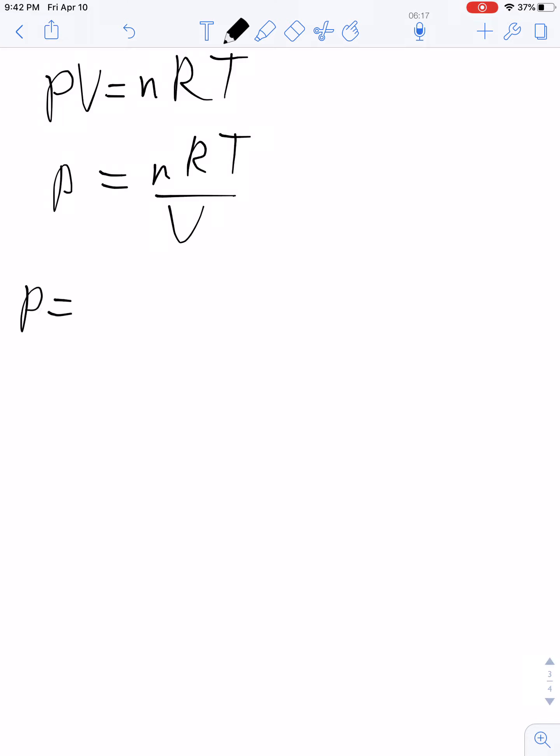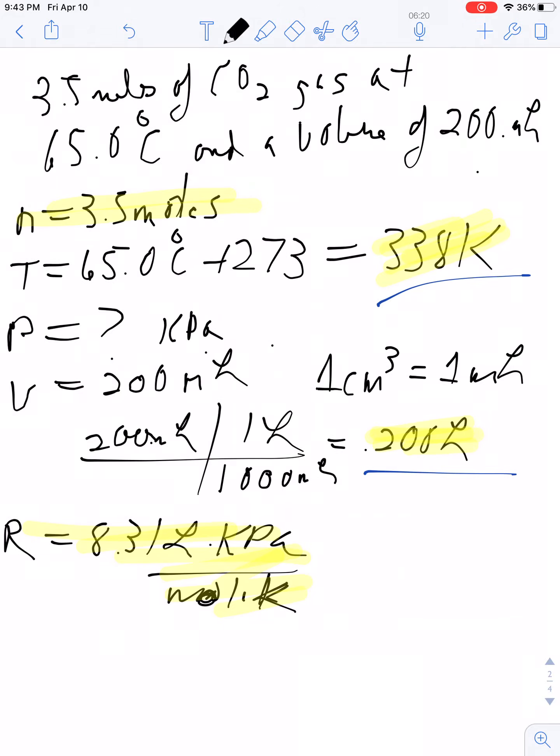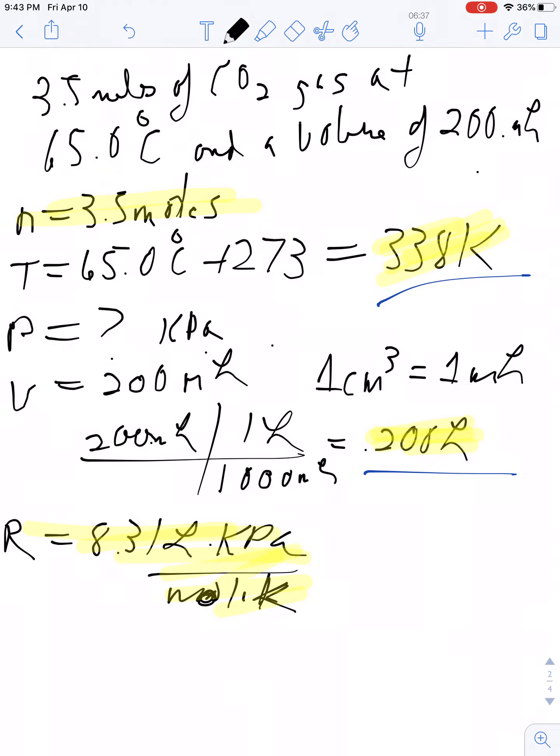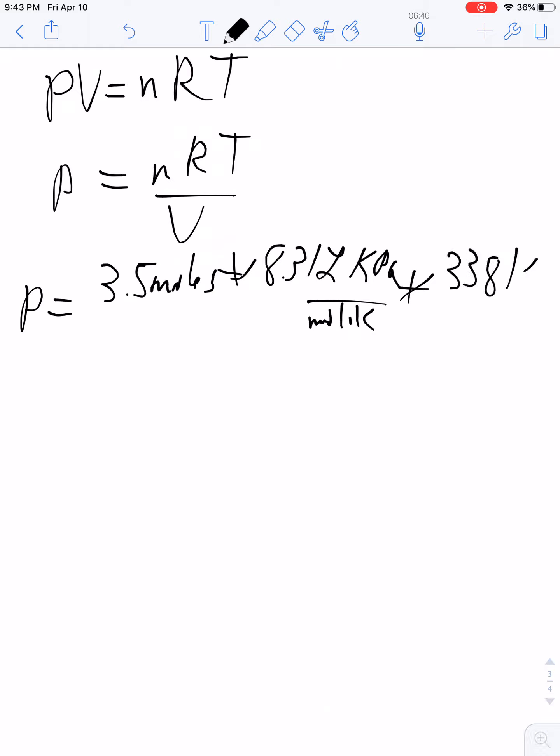The equation is PV equals nRT. I will solve for pressure: P equals nRT over V. Then I will plug in my numbers: 3.5 moles times 8.31 liters kPa over mole Kelvin times my temperature, which was 338 K, and divide it by my volume. The units should cancel so that the only thing left are units of pressure. Moles will cancel with moles, liters will cancel with liters, Kelvin will cancel with Kelvin, and the only thing left is kPa.